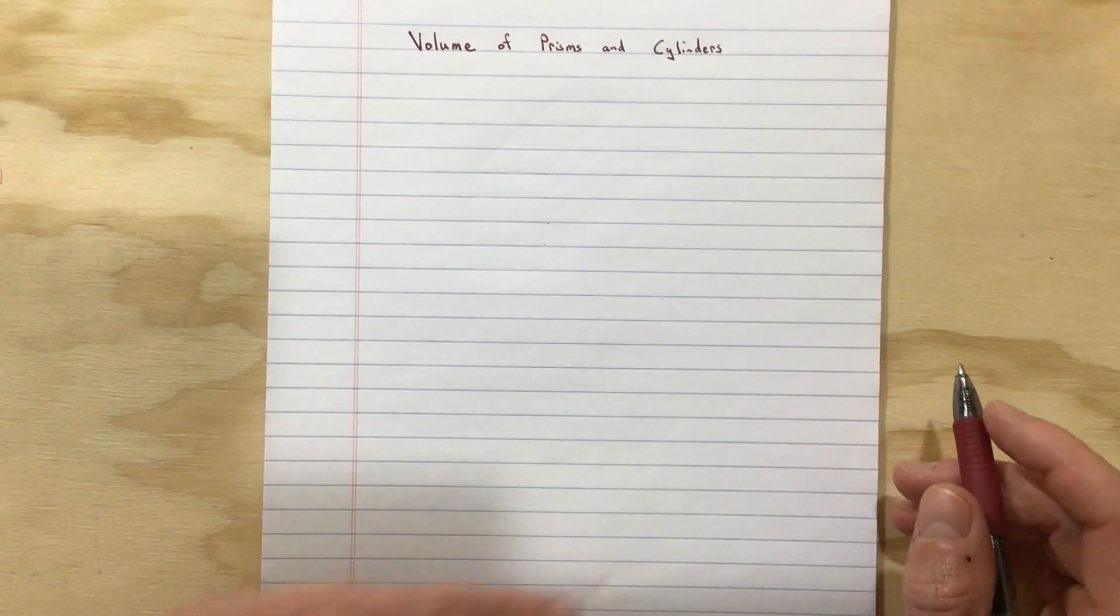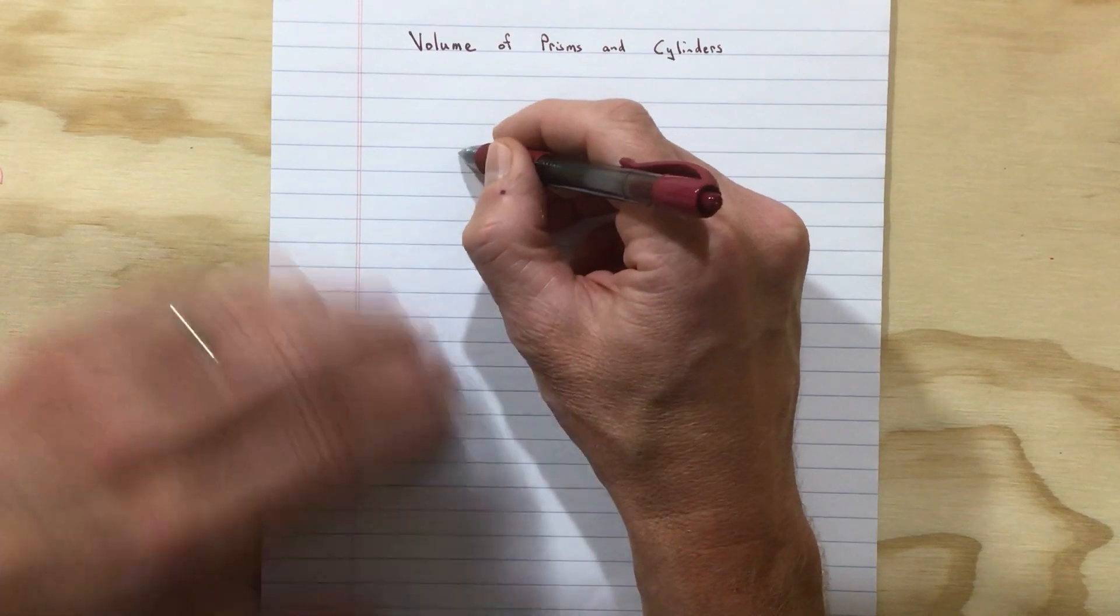All right, let's take a look at the volume of prisms and cylinders. Yesterday we focused on surface area, which is the area of a three-dimensional object - the area of all the faces. Today we're going to look at volume. Volume is another three-dimensional thing, the three-dimensional space. Area is the space inside a 2D object. Volume is the space inside a 3D object.